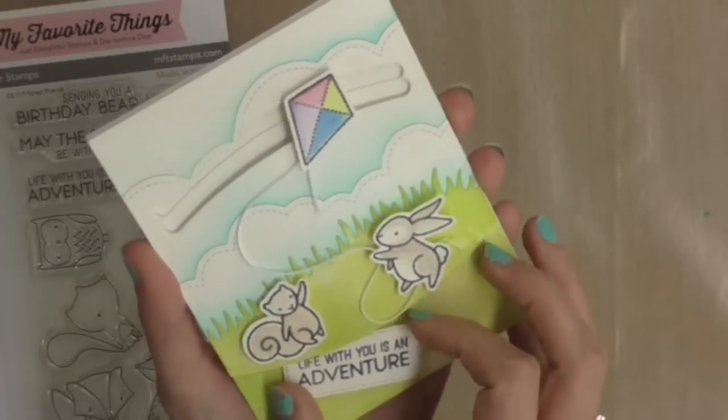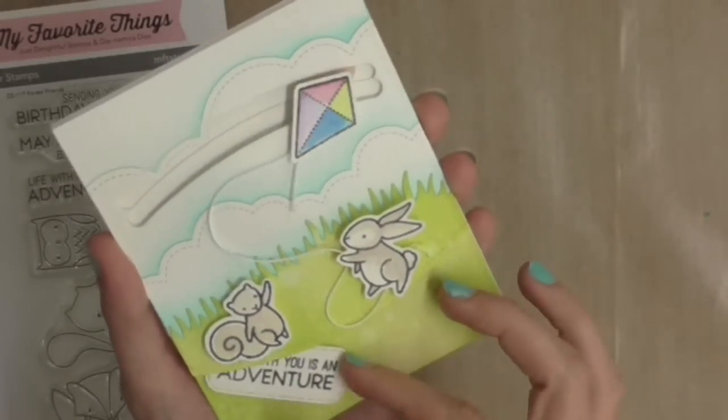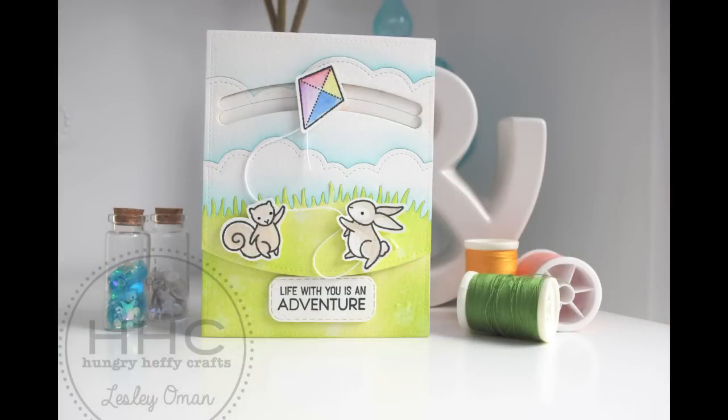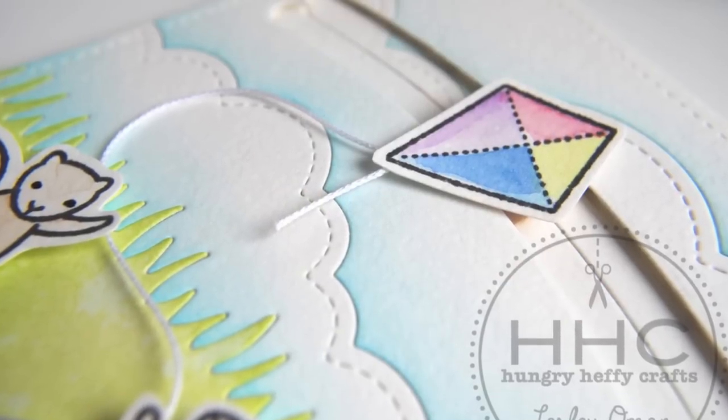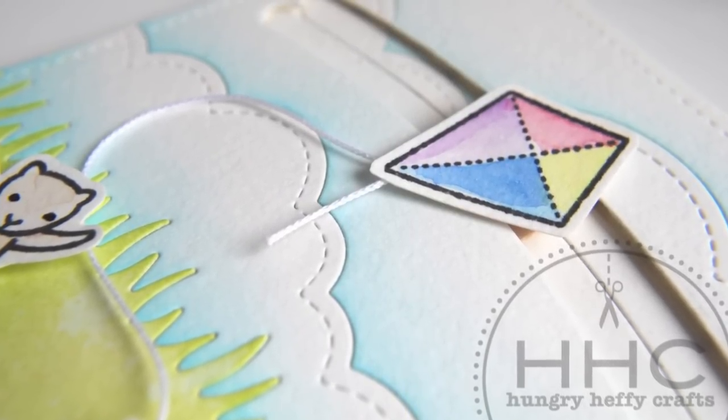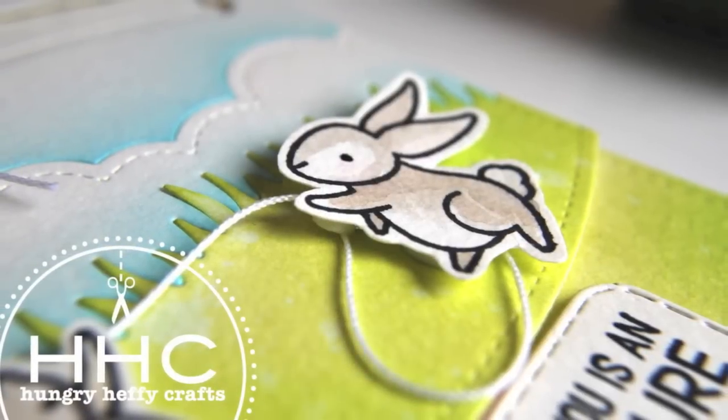Hi everyone and welcome to a Hungry Heavy Crafts video. I'm Leslie Oman and today I have another interactive card to share with you featuring the Ye Kites stamp set and the slide on over dies from Lawn Fawn. So stick with me and I'll walk you through how I made this card.